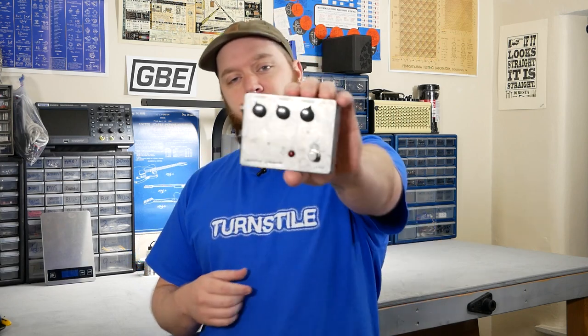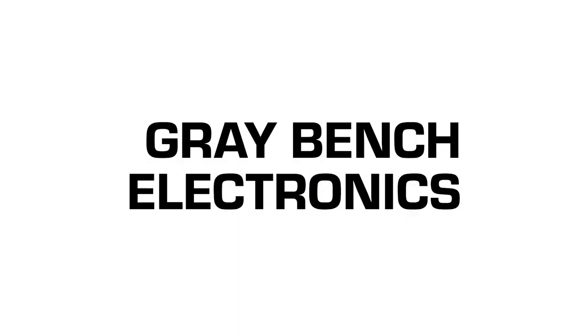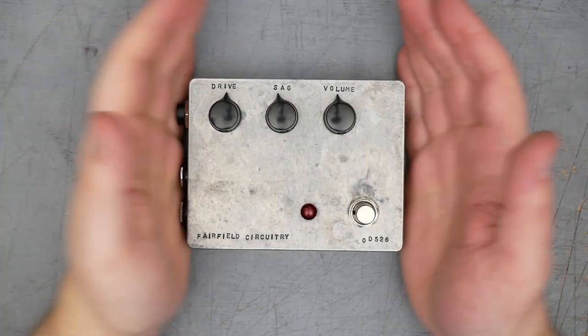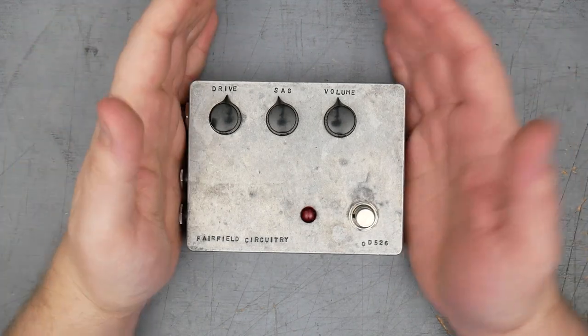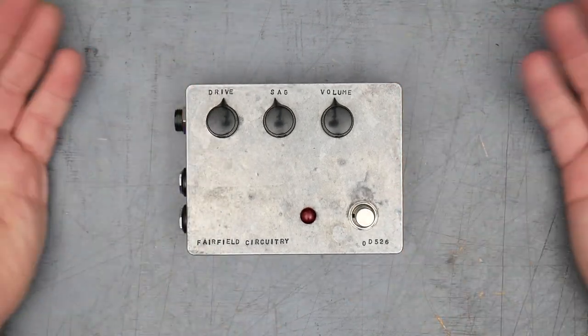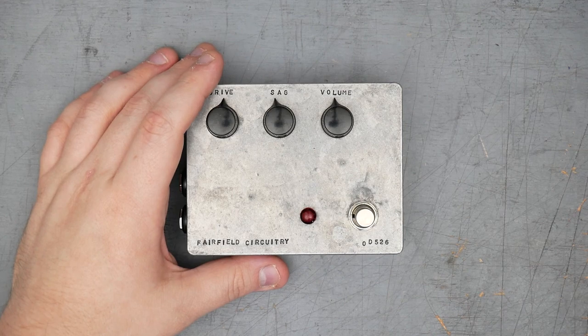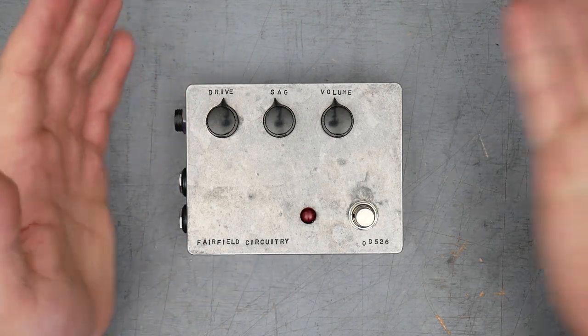Today we have the Fairfield Circuitry Barbershop version 1. Fans of the channel will know that I've done the Barbershop version 2. I traced that out if you're interested in seeing that schematic. It's available on freestompboxes.org. It is actually different than this version.